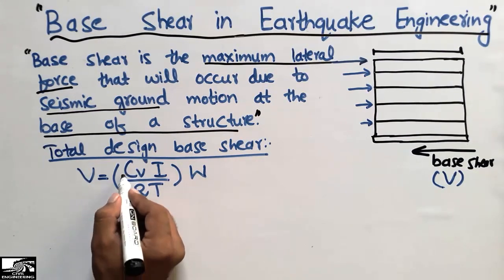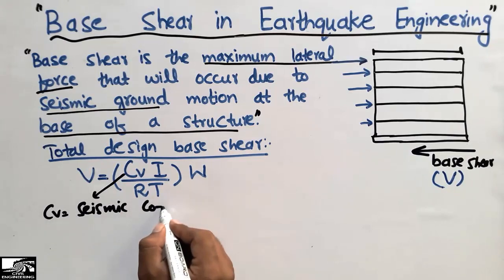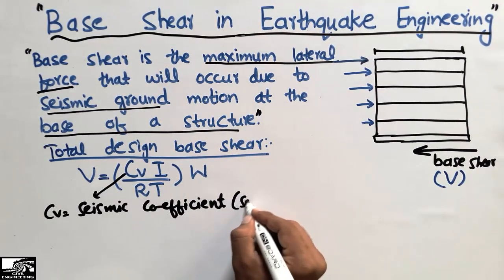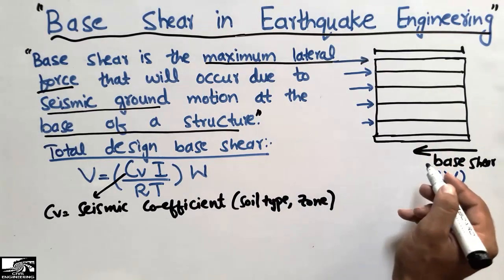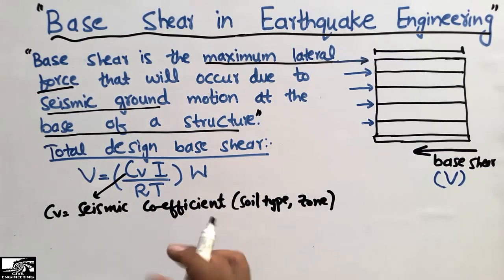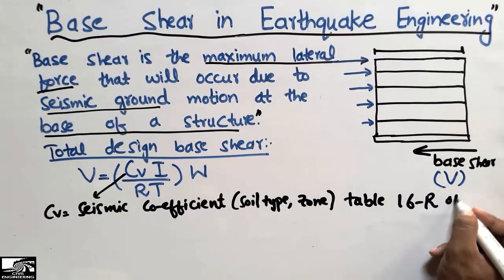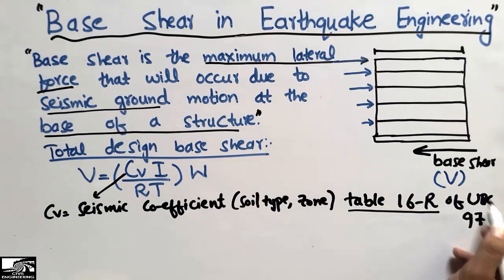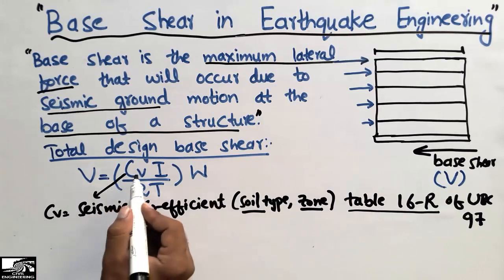CV is the seismic coefficient. It depends on the soil profile — what type of site is under your building — and the seismic zone your building is situated in. You find this value from Table 16-R of UBC 97 (Uniform Building Code), which provides the seismic coefficient for different soil types and different seismic zones.